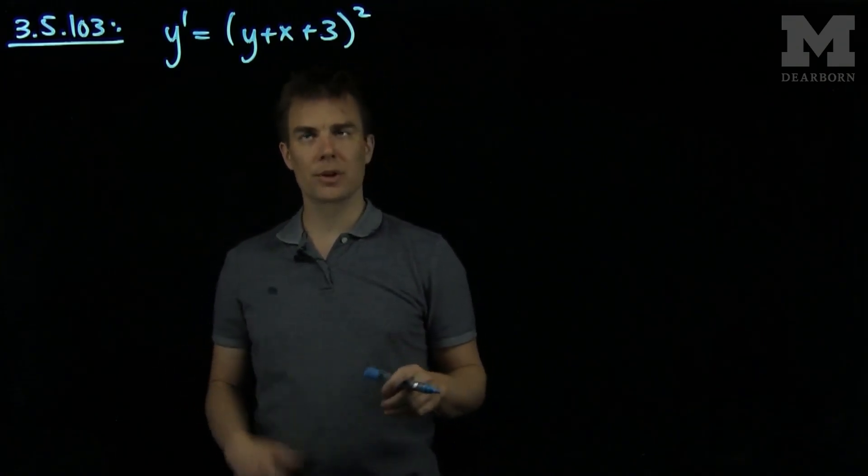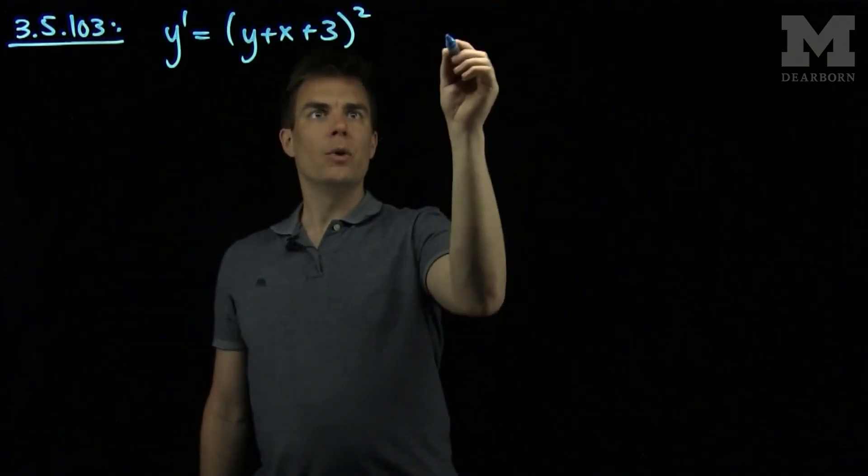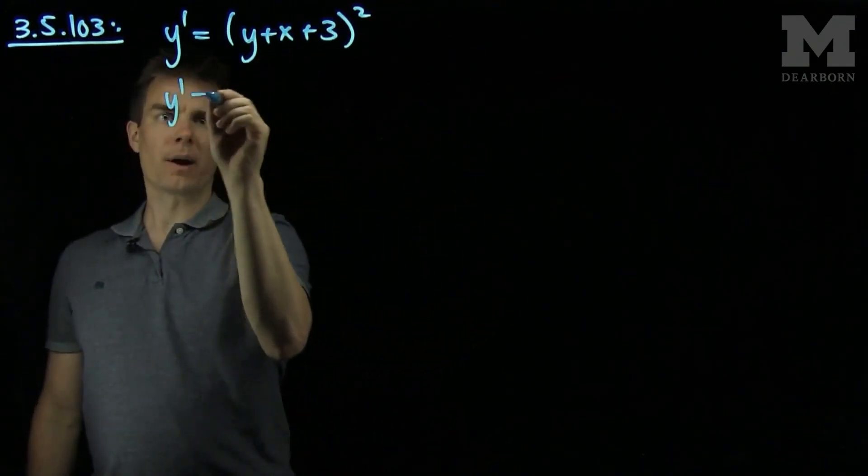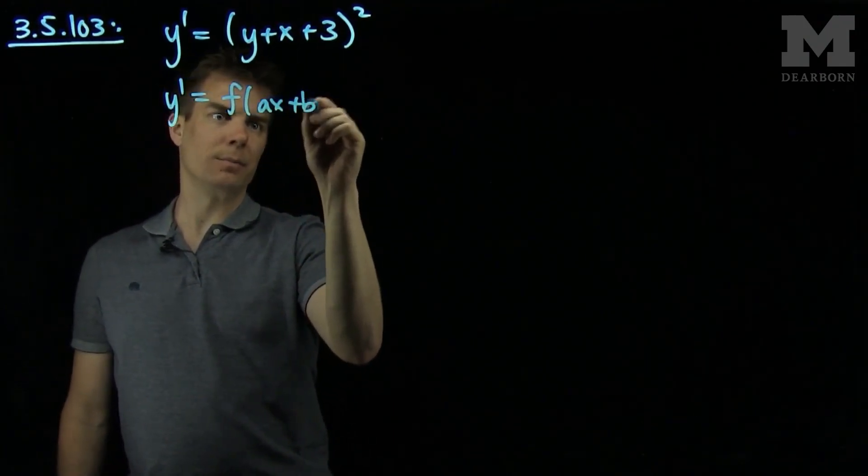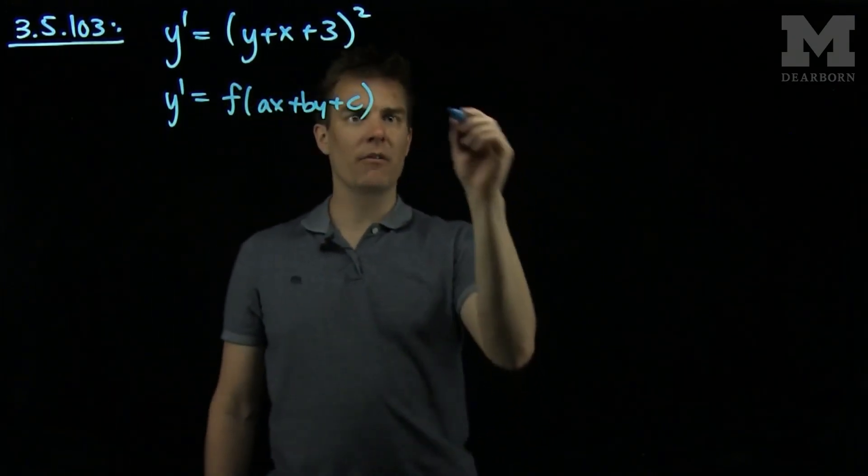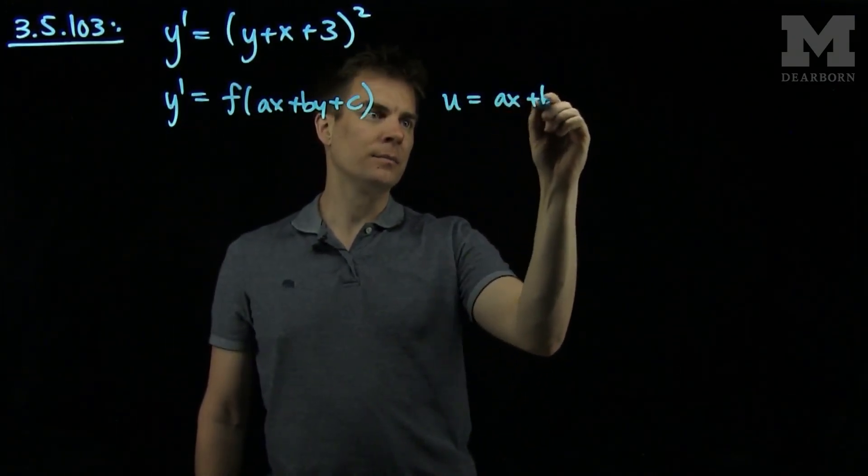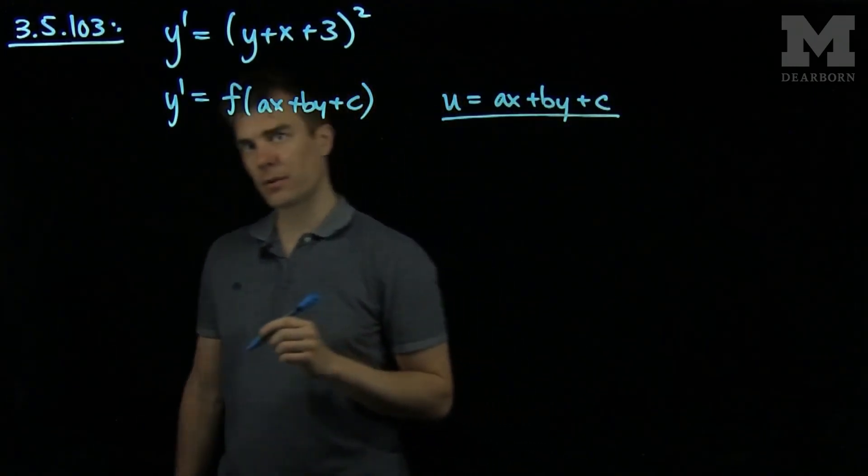So we have to look for a substitution. Whenever we see a linear function of x, y and a constant, we note that this has the form y' is some function f of ax plus by plus c. Differential equations of this form can be solved by making the substitution u equals ax plus by plus c. So this is the substitution we make for these types of differential equations.